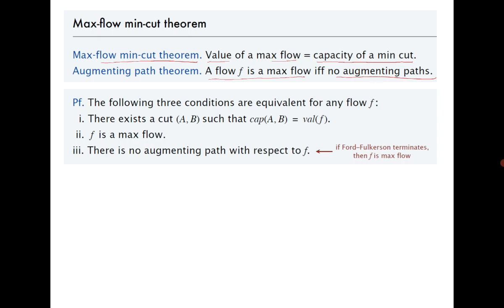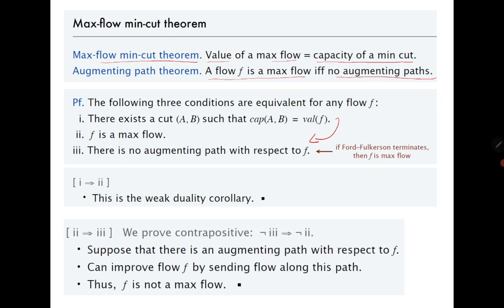The first-to-second and second-to-third implications are quite obvious because we have already proved the first-to-second in the previous slide. For the second — that if f is a maximum flow then there is no augmenting path — we can prove it by contrapositive: if there is an augmenting path then f is not a maximum flow, because we can always enhance the value of the flow by sending flow along this path.